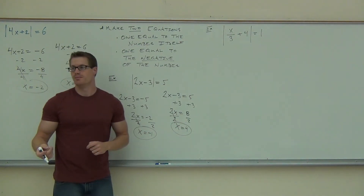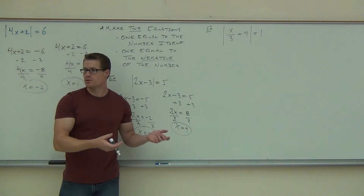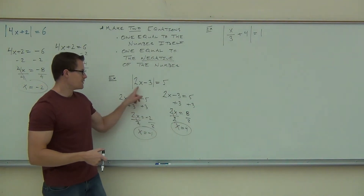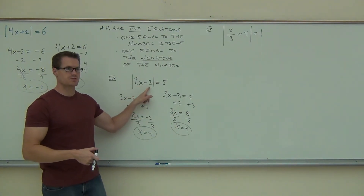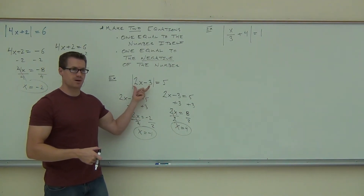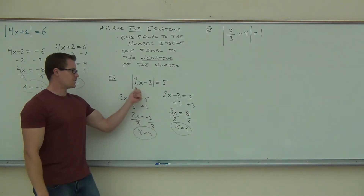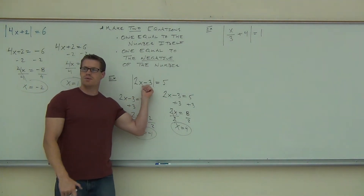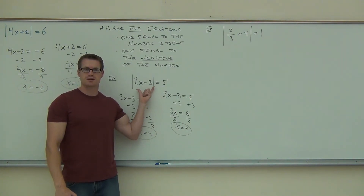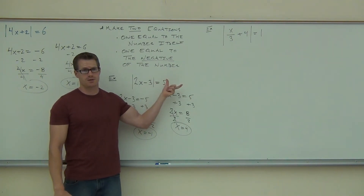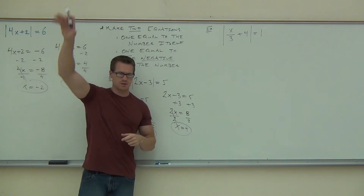Check both of them — make sure you have this right. These are pretty easy to check, so you may as well go through and do that. If we check 4: 2 times 4 is 8, minus 3 is positive 5, absolute value of positive 5 is 5. That works. Negative 1: 2 times negative 1 is negative 2, minus 3 is negative 5, absolute value of negative 5 is 5. They both work out. I hope you got both of those.